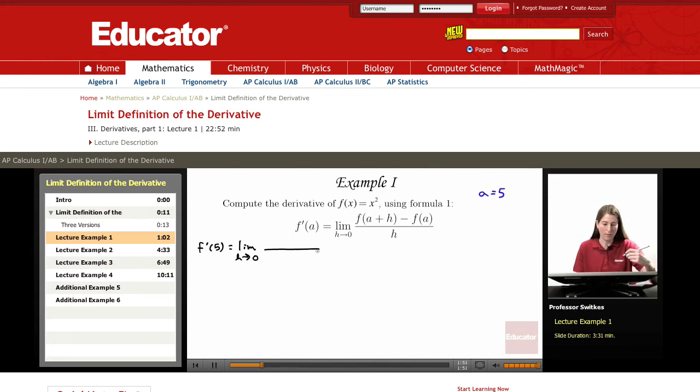Since a is 5, we're looking at f(5+h). Since f(x) = x², f(5+h) = (5+h)². So we have (5+h)² in place of f(a+h). f(a) is f(5) = 5² = 25, and our denominator is h.